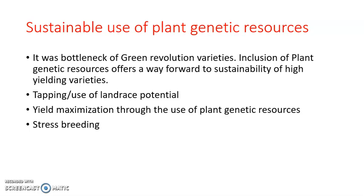The fourth point for sustainable use of plant genetic resources is stress breeding. Stress breeding means breeding a newly developed variety with a land race that is adaptable to a stress environment — such as drought, salinity, or any other stress in which those local land races are growing. When the newly developed variety is bred with that land race, it produces a variety that has the desirable characteristics of the new variety plus the ability to grow in stressed environments from the land race.